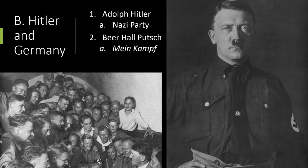Hitler wrote in Mein Kampf that Aryans were the master race — blond-haired and blue-eyed. The Jews, Slavs, and Gypsies were deemed non-white, inferior races. He argued that Germany required Lebensraum, or living space, in Eastern Europe.